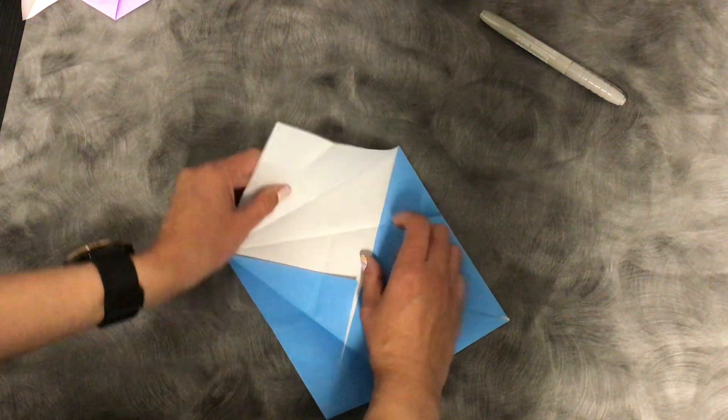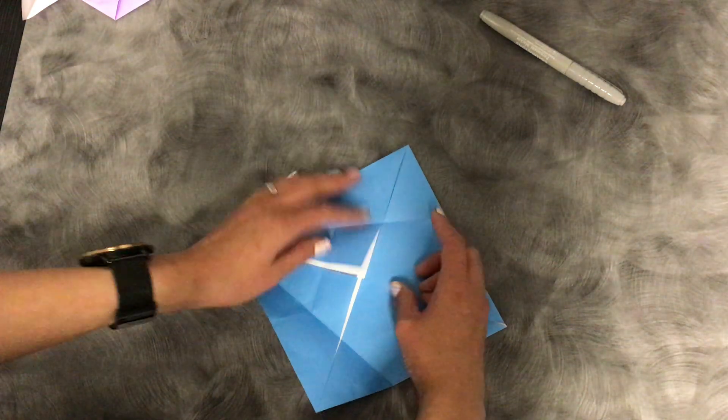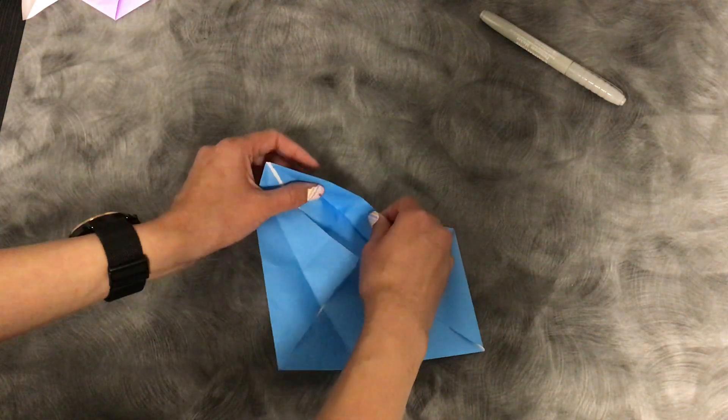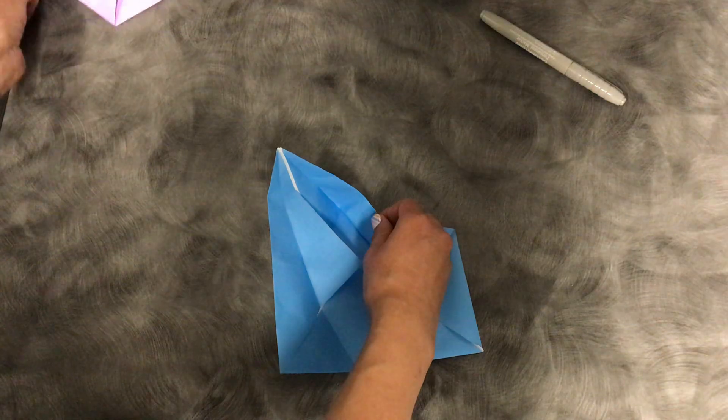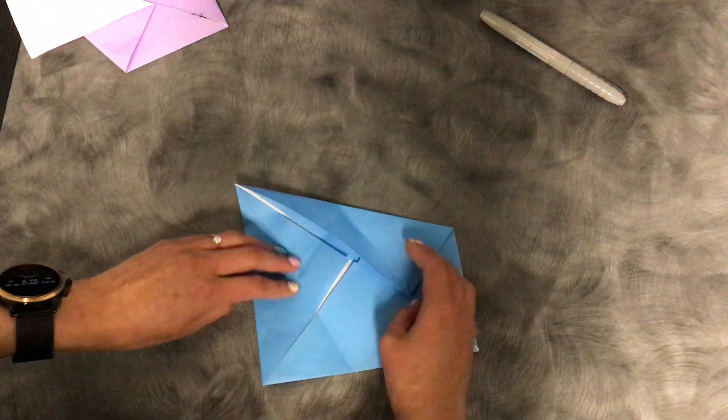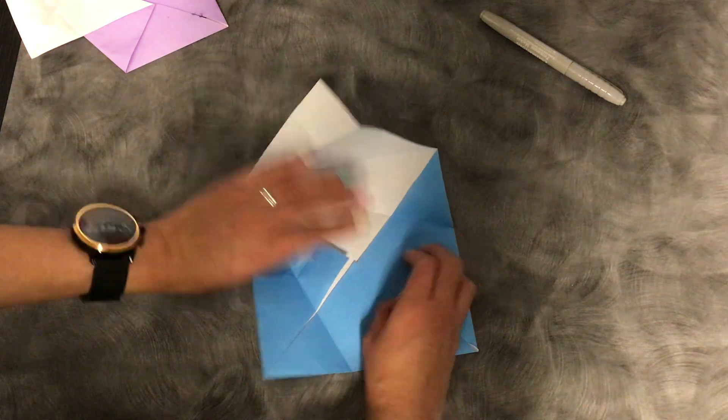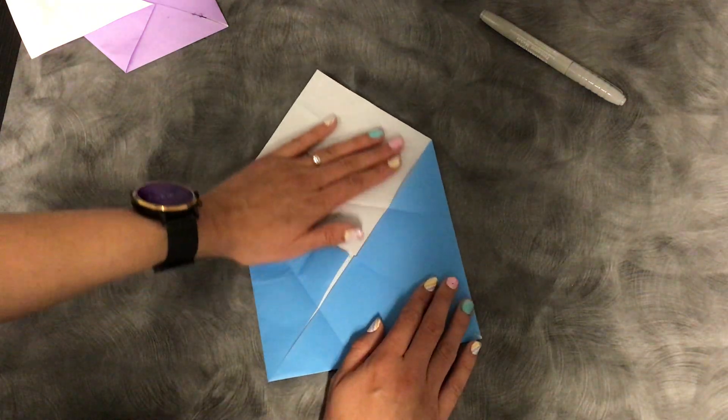So the next thing that you're going to do is leave it folded like this and then you're going to fold it upward so that you can get sort of a square look about it. So, well, it's not a square. It's more like a triangle.